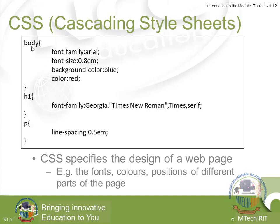And now the CSS — Cascading Style Sheet. As you can see, this is the body selector, which has font size, font family, and background. HTML is just the skeleton, while CSS is used to design and make it beautiful and well-structured. CSS specifies the design of a page: the fonts, colors, and position of different parts of the page. That is how CSS works.